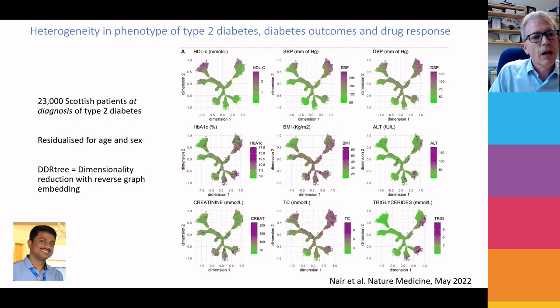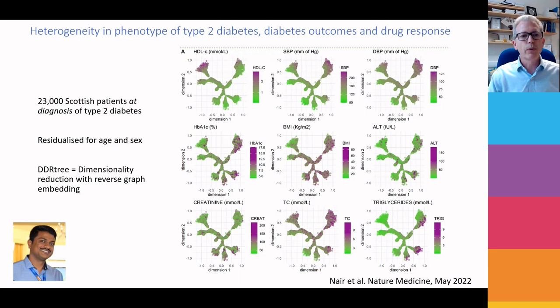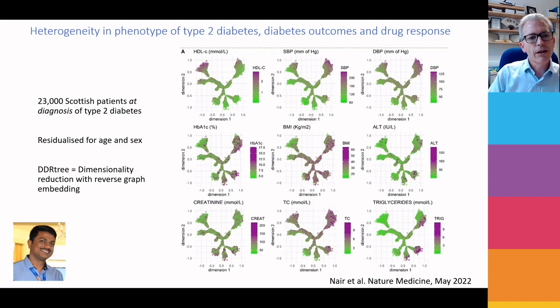When you overlay the phenotypes, somebody up at the top left of this tree has a particularly high HDL; someone down at the bottom right has high triglycerides; the top right is particularly characterized by people with high blood pressure. But what we've done deliberately is keep this as a continuum — we haven't tried to cluster and say there are distinct subtypes. We accept there's a continuum of spread.